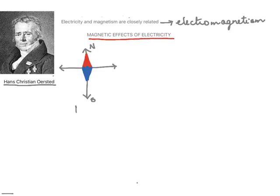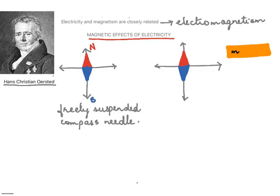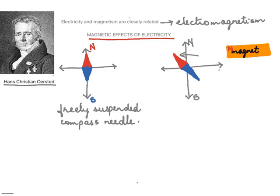When a compass is freely suspended, it remains in the north-south direction. However, if we bring a magnet close to the compass, the compass deflects from the north-south direction. Whenever a compass needle is not in the north-south direction, it is an indication that there is another magnet close to the compass. If you remove the magnet, the compass returns back to its north-south direction.